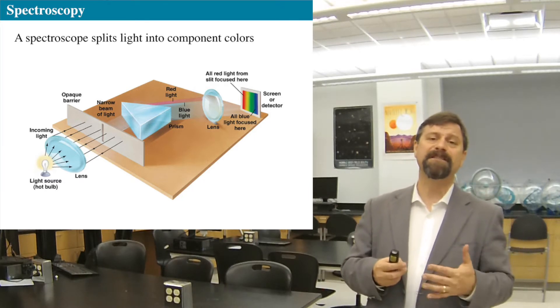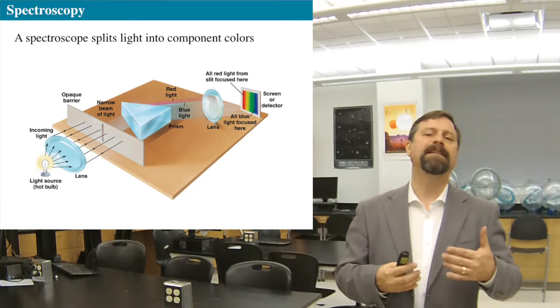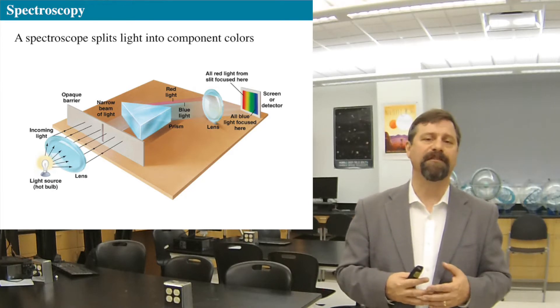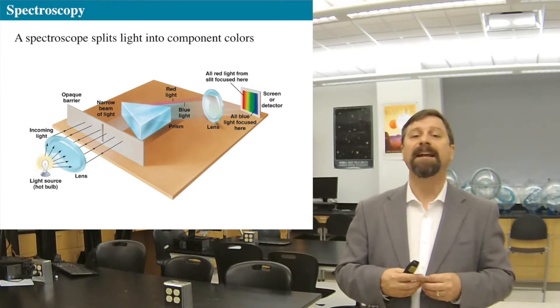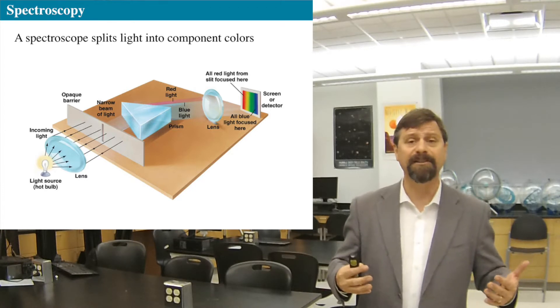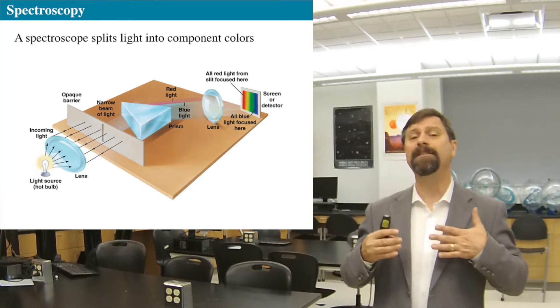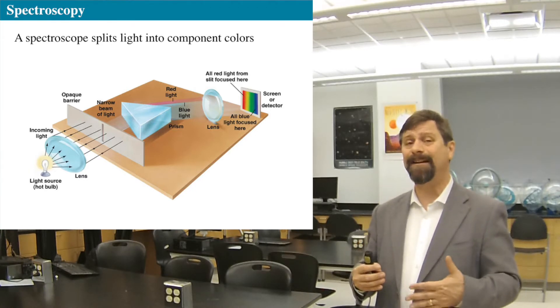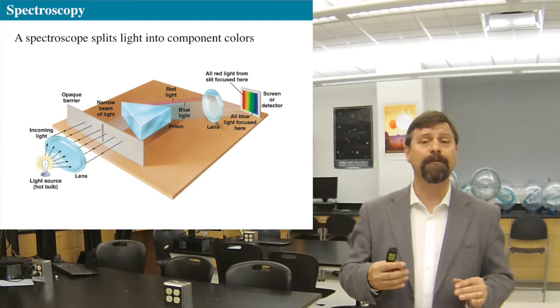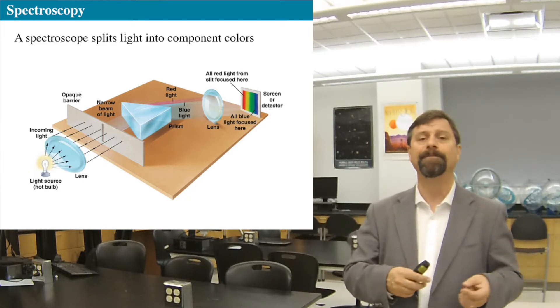Spectroscopy is simply the way we take the light that's coming from a distant source and use some method by which we can break it apart into a spectrum to see how the intensity of the light varies with wavelength or frequency.